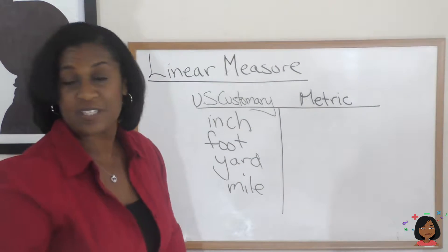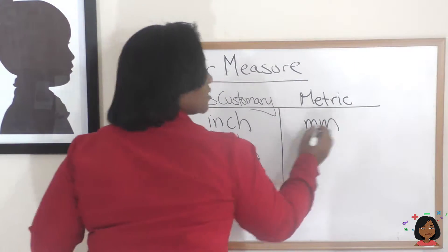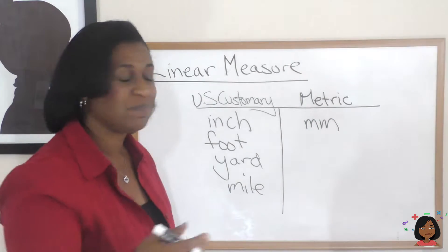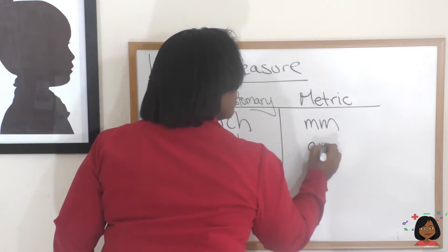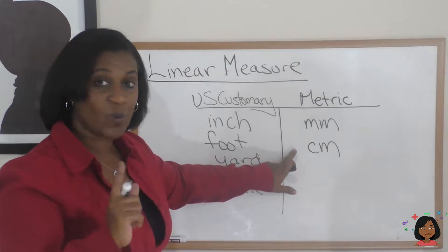But for the metric system, there's different terms. We have the word millimeter, which is abbreviated with mm. We have centimeter. By the way, ten millimeters equals one centimeter.